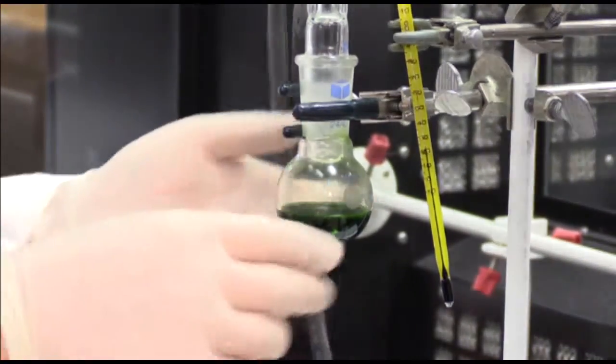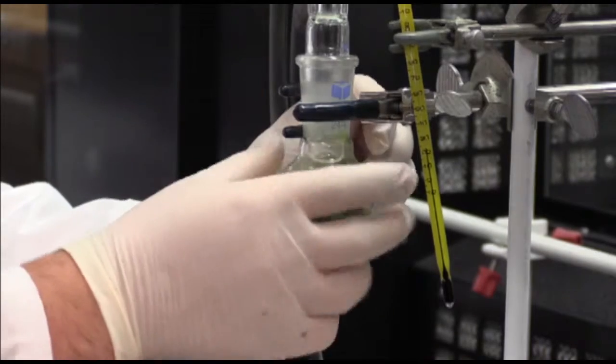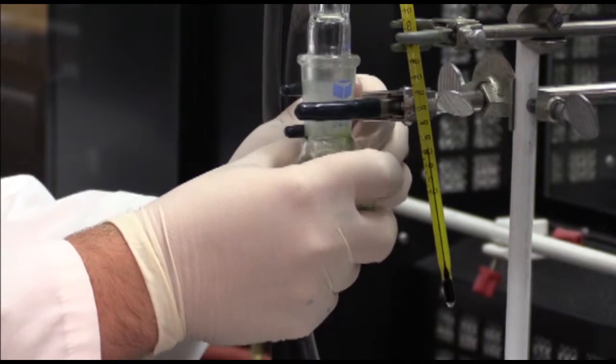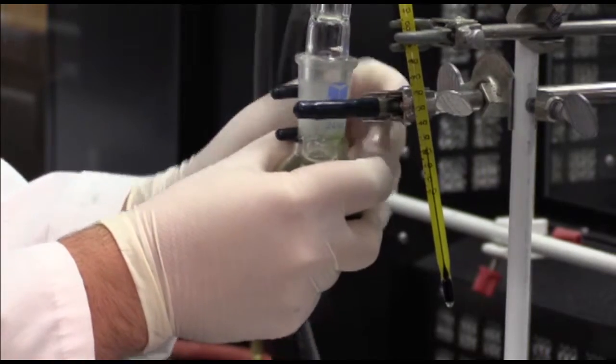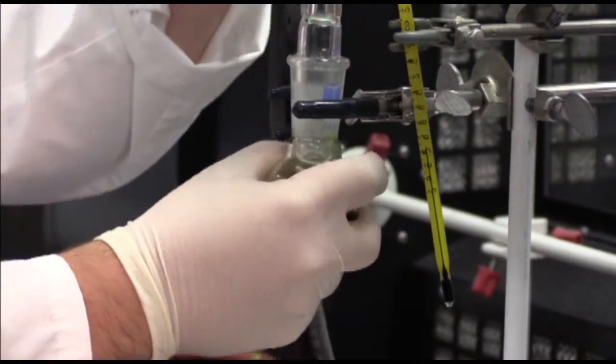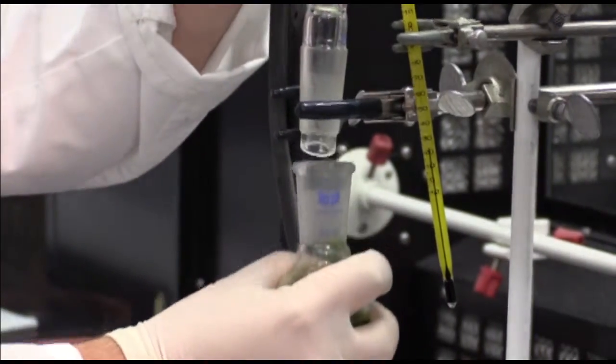you can now loosen the clamp that is around the round bottom flask and remove the round bottom flask.